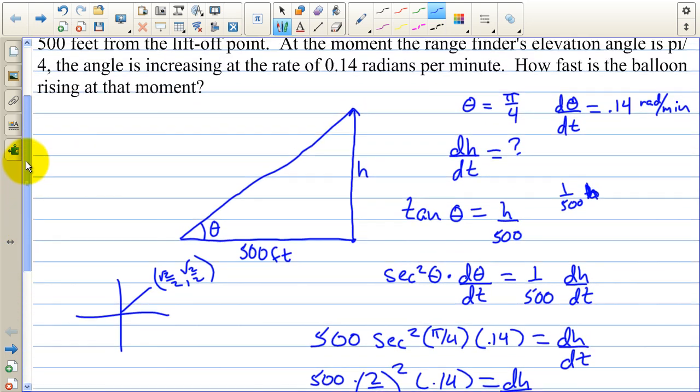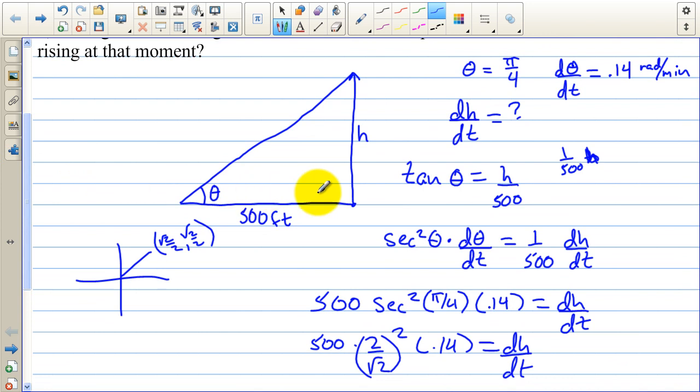Now I want you to note that I was able to plug this 500 in right away for this side of the triangle because the 500 was not going to change. Here is the guy rangefinding it right here and there's the point where the balloon lifted off and those two things are not going to change. Since this distance right here is not changing, I can plug that value in right away.